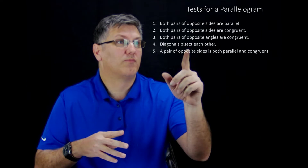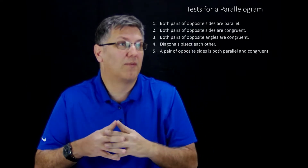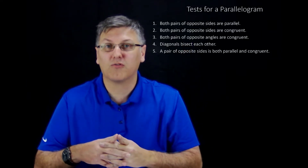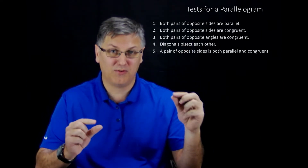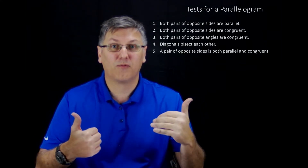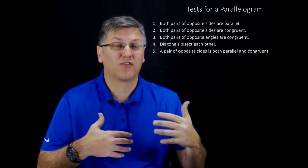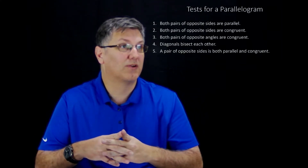The third one is that both pairs of opposite angles are congruent. So if we're working with angles and the opposite angles are congruent, then from there we can actually say that it is going to be a parallelogram.